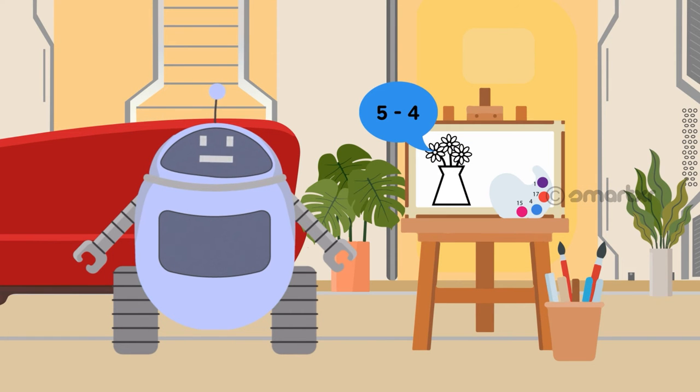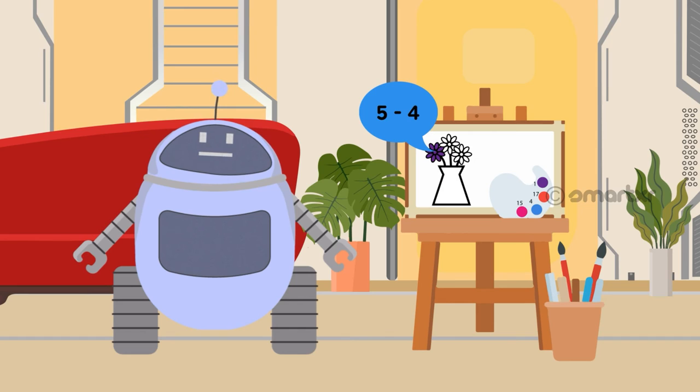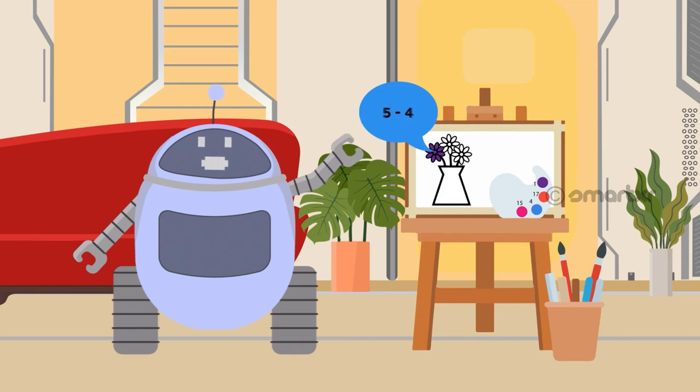Now we can subtract 4 from 5 to get the color of the first flower. Our answer to the first problem is 1. The number 1 has violet color. So the color of the flower is violet. It is such a pretty color, isn't it?